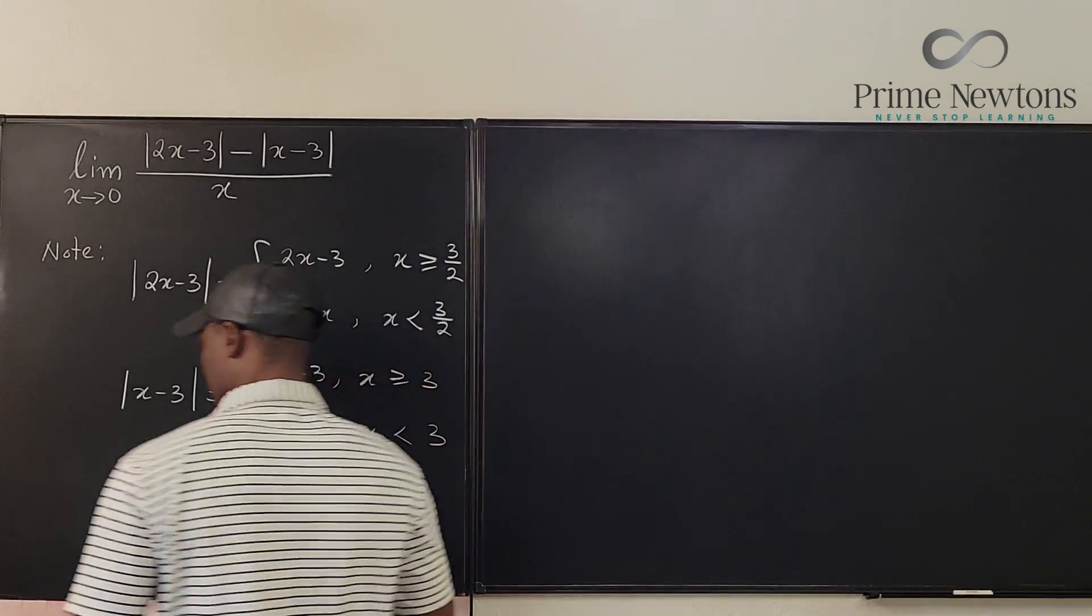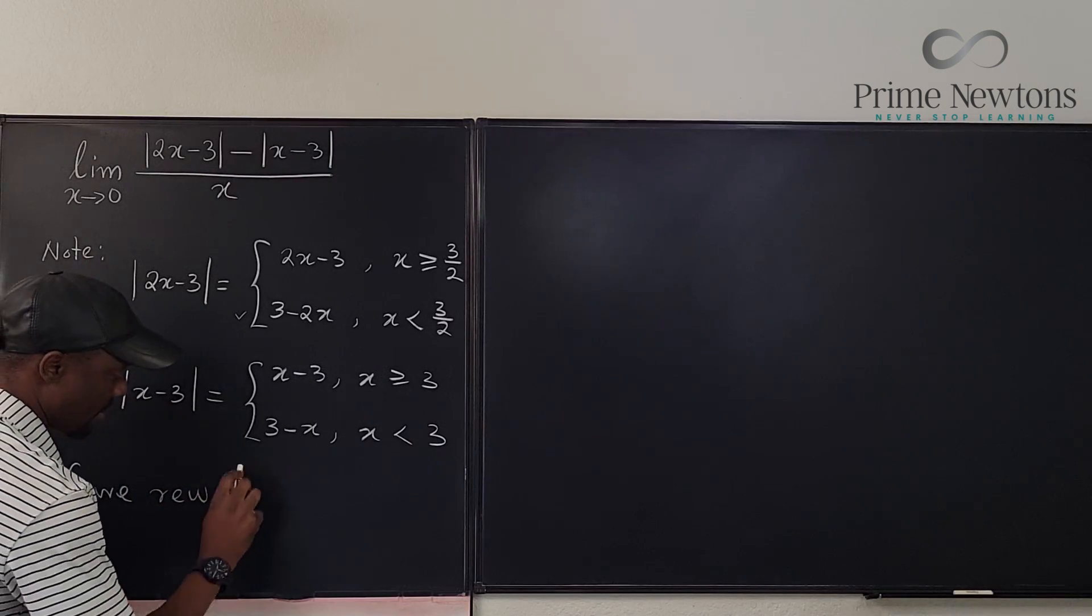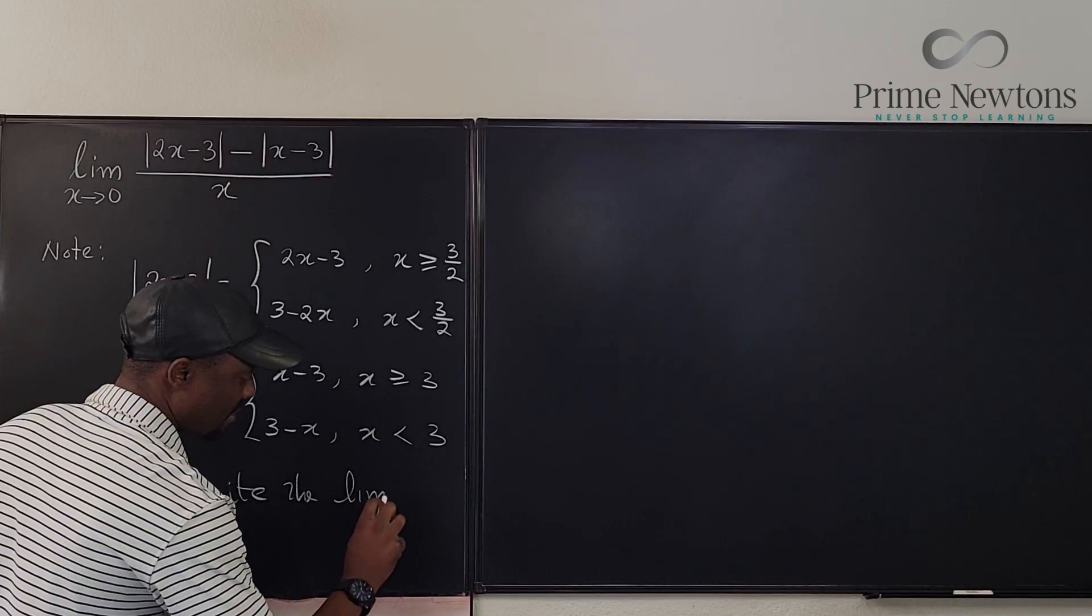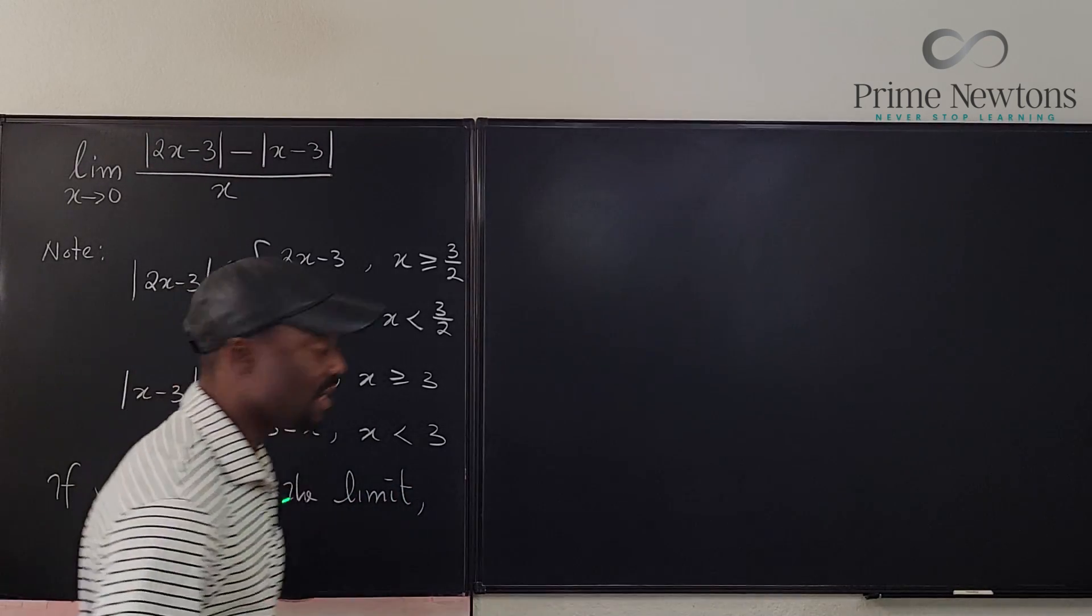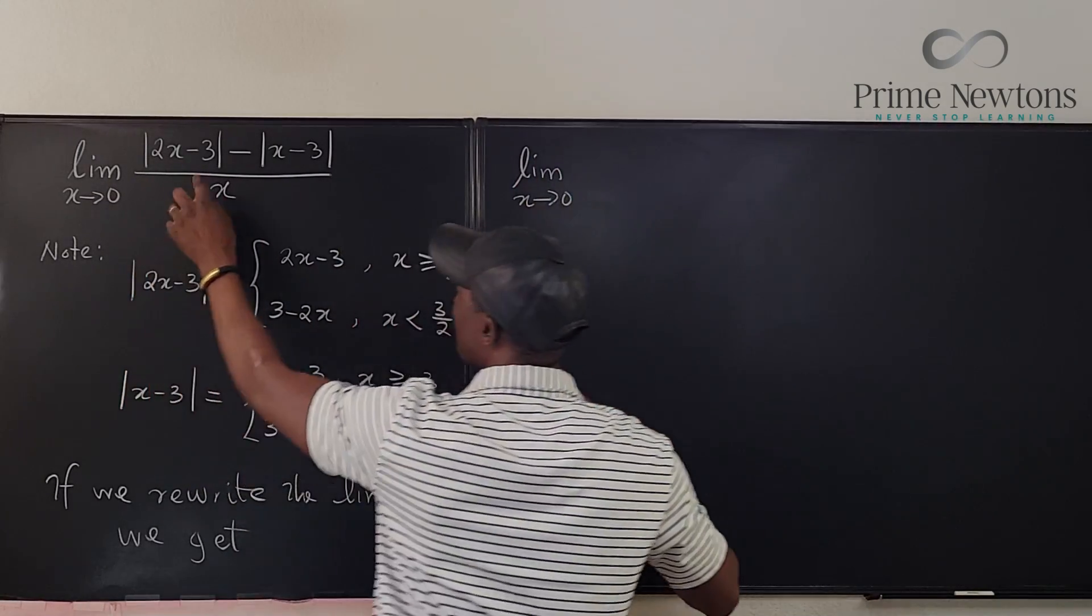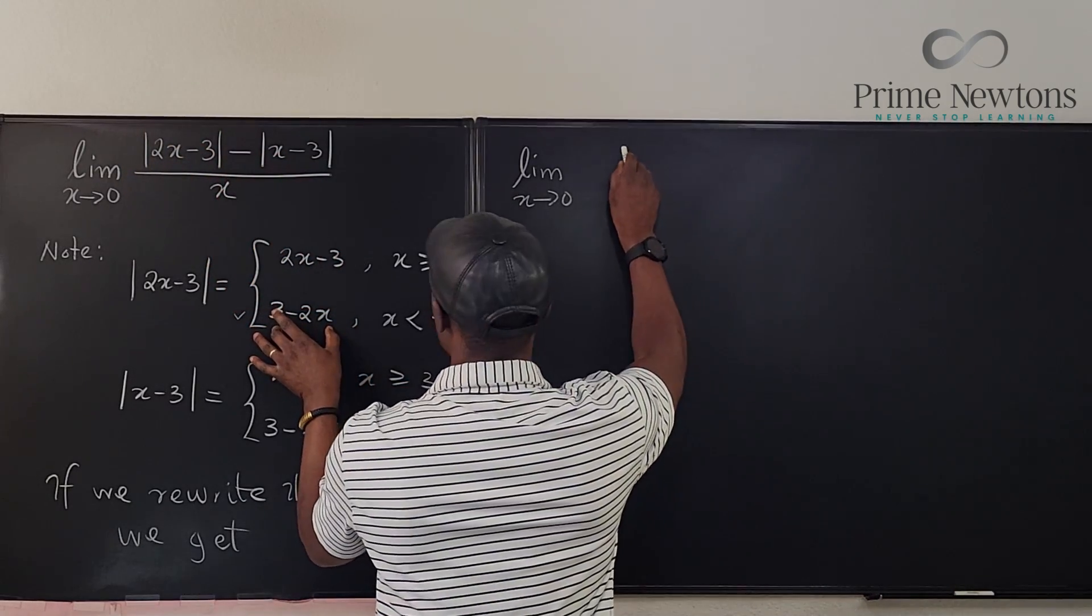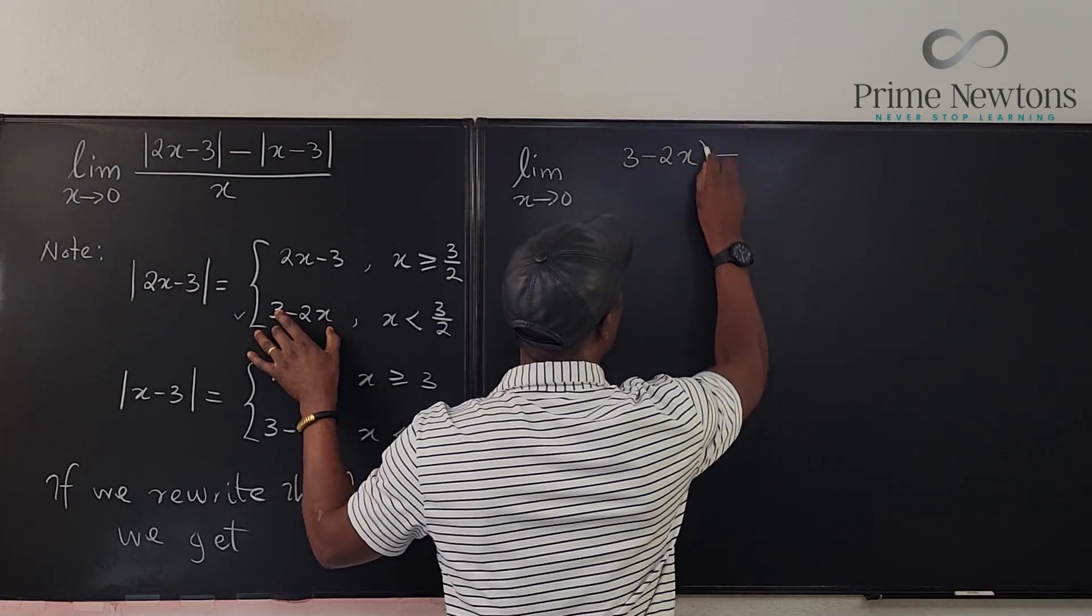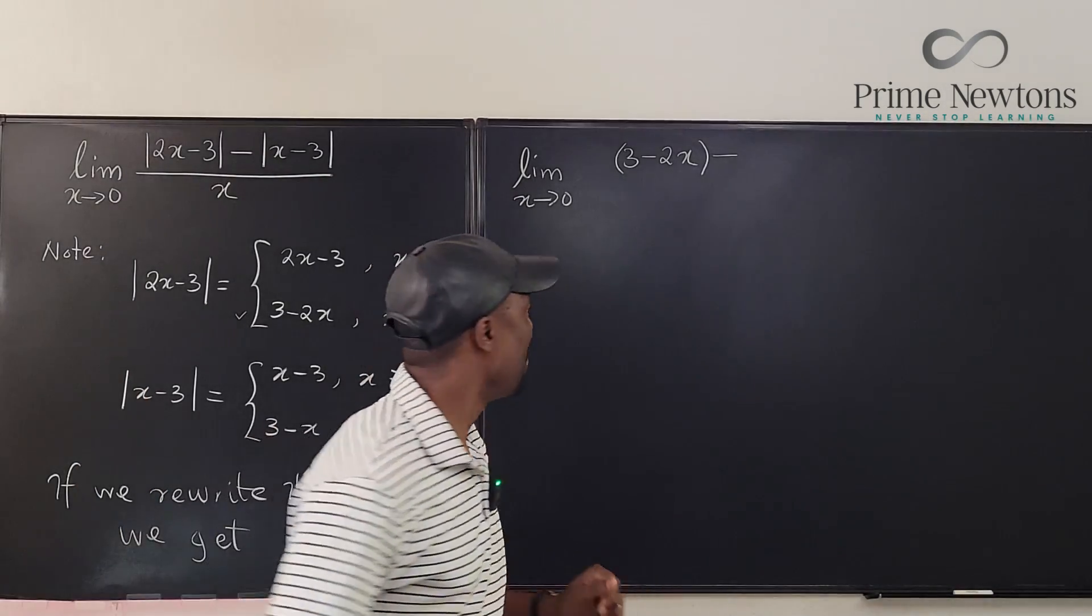So if we rewrite the limit, this is what we're going to get. We're going to get the limit as x goes to 0 of... Now this part will be replaced with this. We're going to get 3 - 2x minus... You see that? Just put it in. We now use parentheses because the absolute value bars are gone, minus...